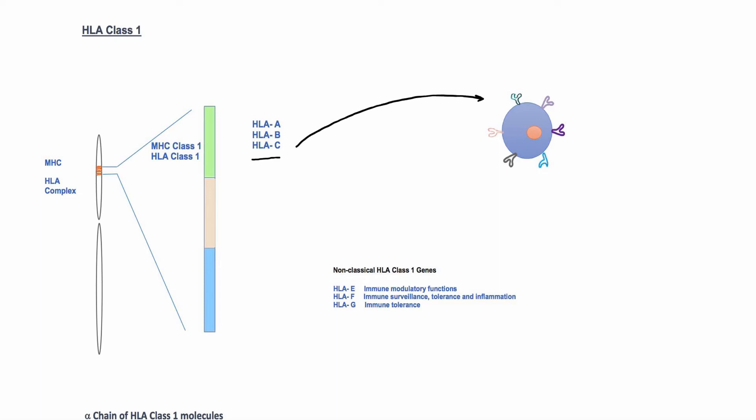This ultimately results in different peptide binding specificities of each molecule. As these genes are codominantly expressed, each cell can have up to six different types of HLA class 1 molecules derived from two chromosomes.